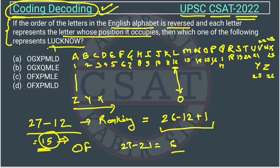Now we will check for C. C is at position 3. When we will reverse it, which letter will be at position 3? This will be 27 minus 3 equals 24. At 24 we have X.